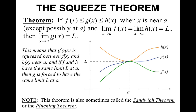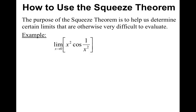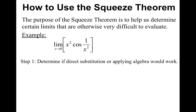Also, this theorem is sometimes called the sandwich theorem or the pinching theorem — your book calls it the squeeze theorem. So how to use the squeeze theorem: the purpose of the squeeze theorem is to help us determine certain limits that are otherwise very difficult to evaluate, such as the limit as x approaches 0 of x squared times cosine of 1 over x squared.